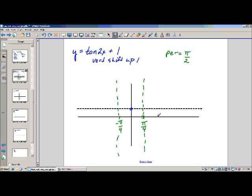Now, if I wanted to graph an additional cycle, I could add pi over 2. One-fourth plus one-half is what? One-fourth plus two-fourths is three-fourths. And there would be another asymptote at 3 pi over 4.